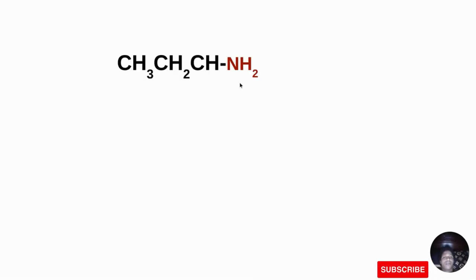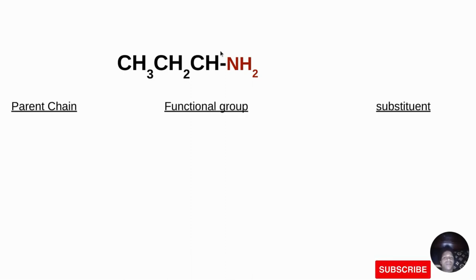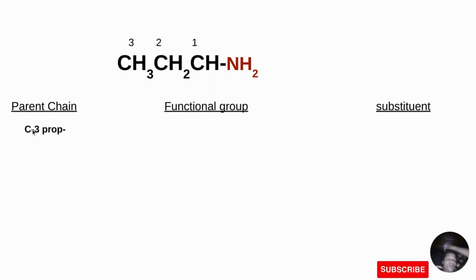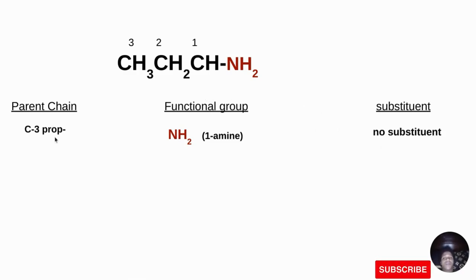Let's move on to amines. Amines can be named by using the NH2 group. In naming amines, we are always looking for the NH2 group and the same three things: parent chain, functional group, and substituent. For the first amine example, the parent chain has 3 carbons, so it is 'prop'. The functional group is NH2 at carbon 1, so we call it '1-amine'. There is no substituent. The name of the compound is propan-1-amine, or simply propylamine.